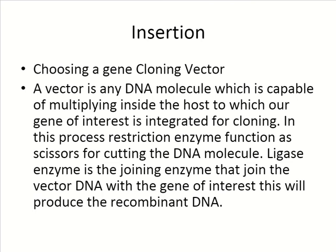For insertion, you need to choose a gene cloning vector — a DNA molecule capable of multiplying inside the host into which our gene of interest is integrated. In this process, a restriction enzyme functions as scissors for cutting the DNA molecule. That restriction enzyme cuts the host's DNA, allowing the previously cut recombinant DNA to enter the host genome. A ligase enzyme is then used to join that DNA and produce the recombinant DNA.